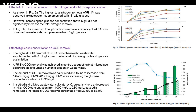In Figure 4, the effect of glucose concentration on COD removal is given. The highest COD removal of 96.9% was observed in wastewater supplemented with 5 g/L glucose, due to rapid biomass growth and glucose assimilation. A 75.8% COD removal was observed in control, suggesting that microalgae cells were able to uptake nutrients present in wastewater. The amount of COD removal increased from 1,552 mg/g to 8,171 mg/g DCW while increasing the glucose concentration from 2 to 30 mg/L. In settled and diluted wastewater cultivated by C. vulgaris, a decrease in initial COD concentration from 1,000 mg/L to 250 mg/L caused a remarkable increase in COD removal percentage from 20.6% to 88%.